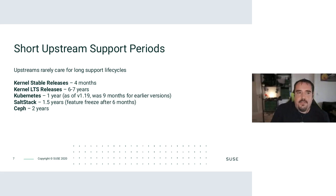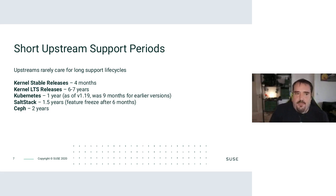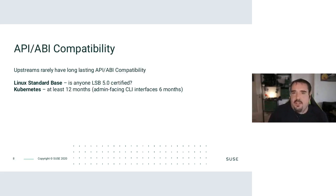Most of these upstream projects have incredibly short support periods. When we say support, we're talking about things like patches and CVEs, and in some cases also API and ABI stability. A typical kernel release lasts four months before it's replaced by the next one. Even LTS releases have six or seven years of support, which is half as long as we support a SLE release. Kubernetes just made a big effort over the last three years to finally increase their support lifecycle — they went from nine months to one year, which is incredibly short. Projects like SaltStack only have a year and a half, and it's pretty much frozen after six months.